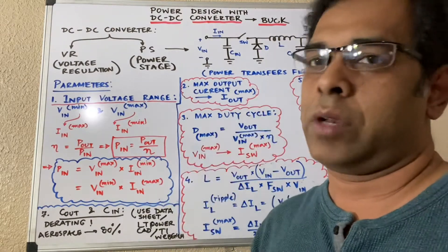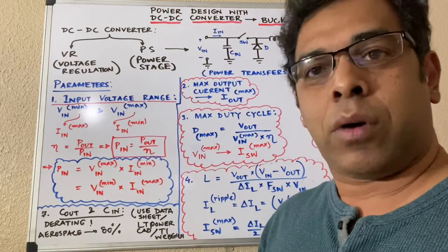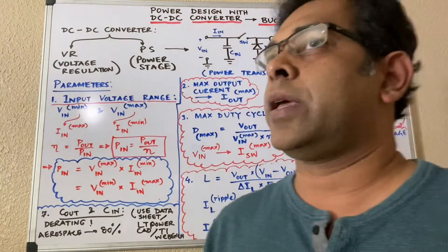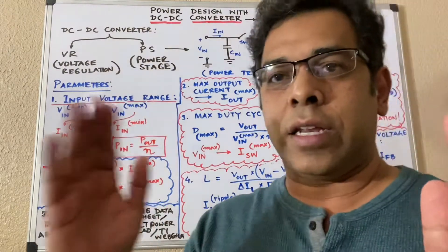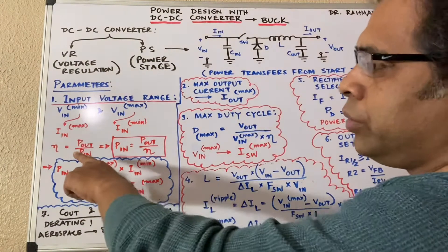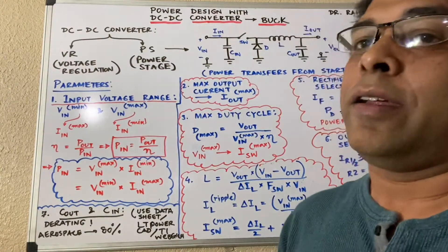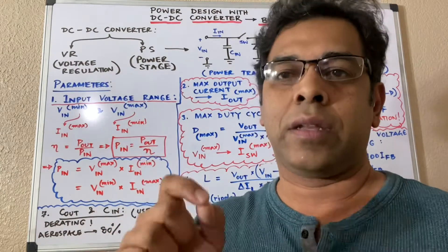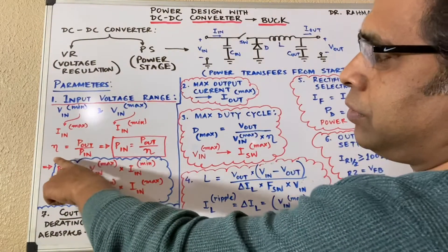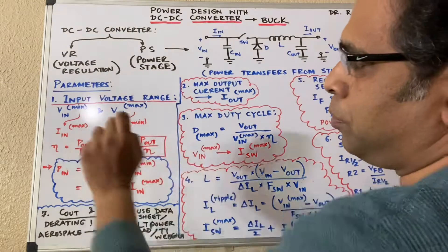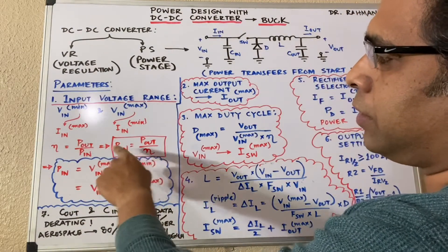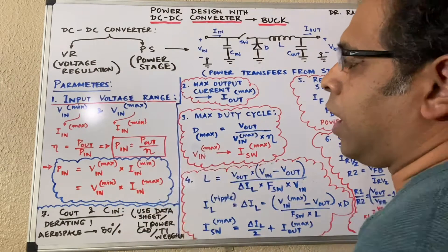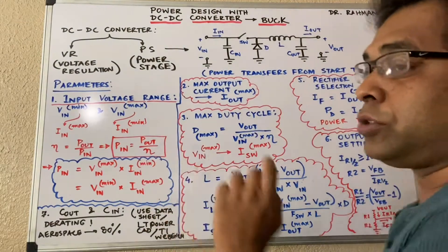Efficiency (η) refers to how much power conversion you achieve — it's the ratio of output power to input power, and it should ideally be above 95%, or at least 90%, in your operating frequency regime. For example, 90% efficiency means 10% power loss through the converter. Efficiency equals output power divided by input power.